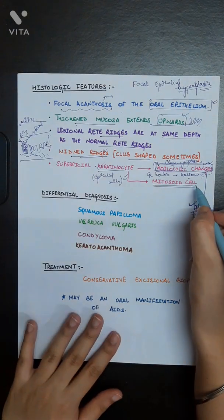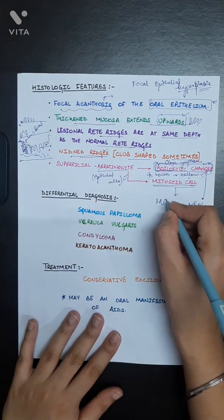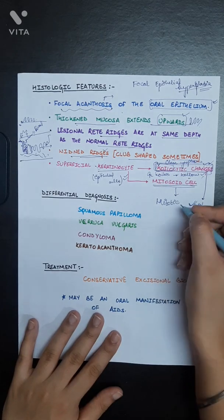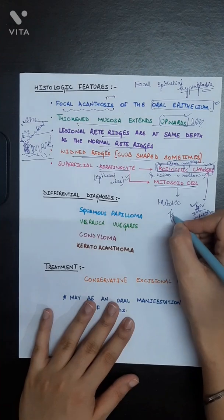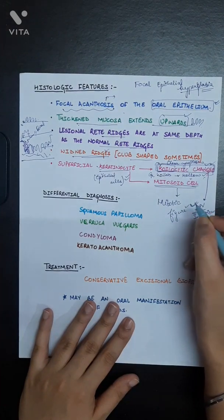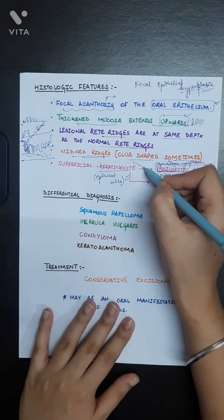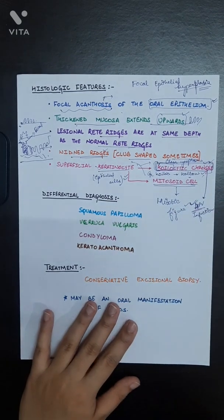The mitosoid cells are basically mitotic structures which are seen. The normal cells are transformed into these structures, the superficial ones.